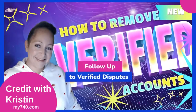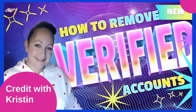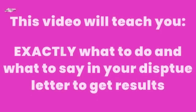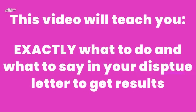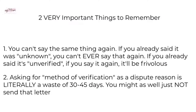Today we're talking about how to remove verified accounts and how to follow up with the credit bureaus. By the end of this video, you're going to know exactly what to do and what to say in your dispute letters to get results. Two very important things to remember: number one, you can't say the same thing again — if you already said it's unknown or unverified, you can't say that again, because it'll be frivolous. And asking for a method of verification as a dispute reason is literally a waste of 30 to 45 days.